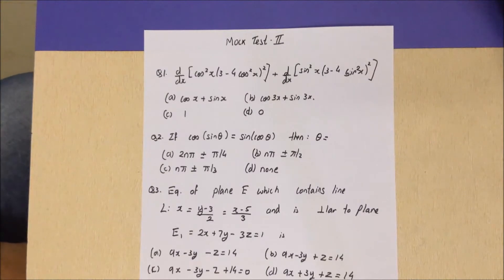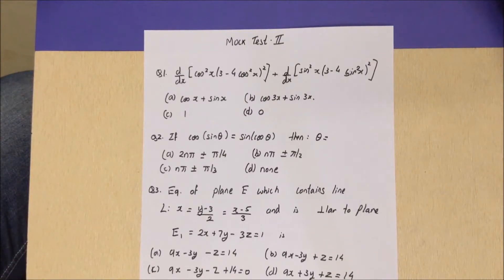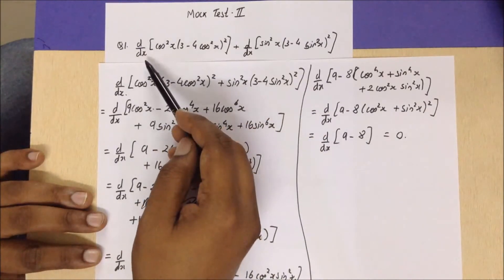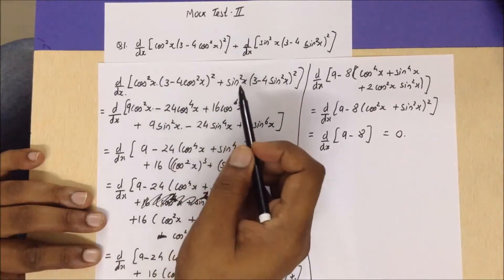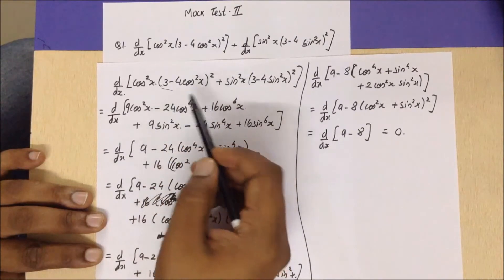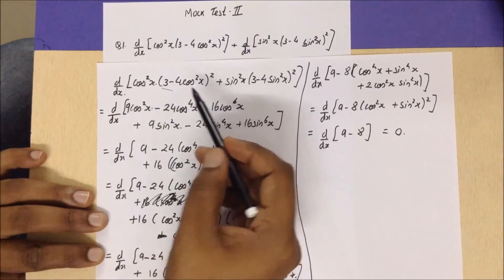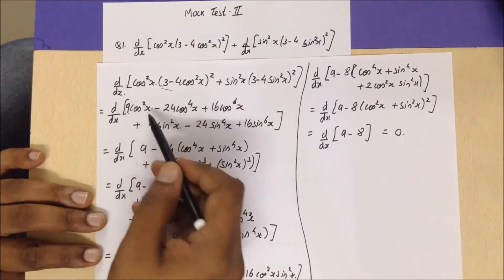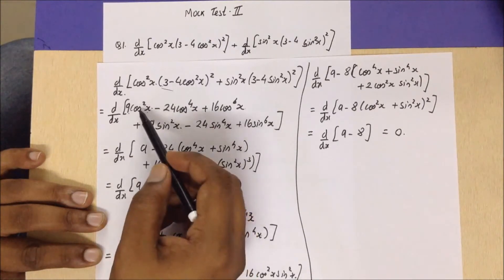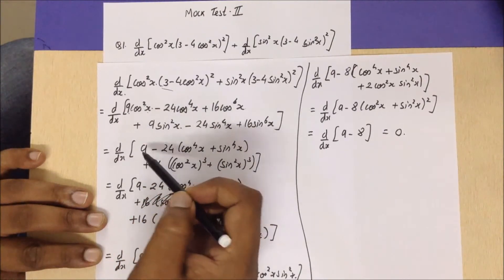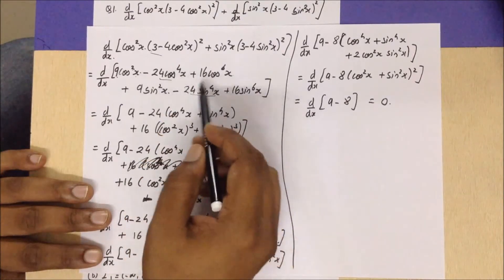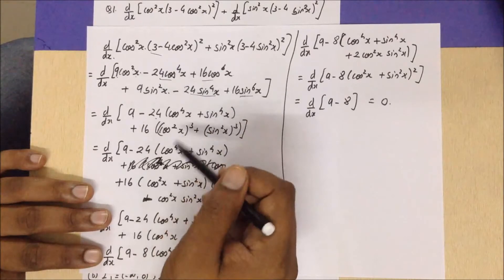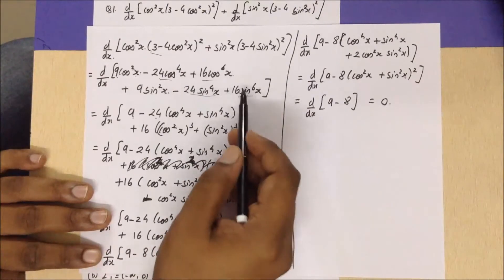The first question is a derivative question where we have to find the derivative of a given term. We simplify it by taking the derivative term common to both brackets and then solving. We open it up by applying the (a − b)² formula, getting 9cos²x + 9sin²x. Taking 9 common gives cos²x + sin²x = 1, so that remains as 9.